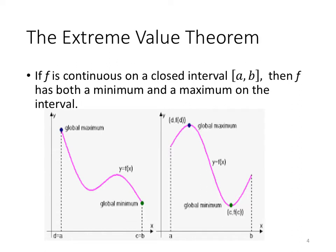Here's the Extreme Value Theorem. The Extreme Value Theorem says if f is continuous on a closed interval from a to b, then f has both a minimum and a maximum on the interval. It could be that the maximum or minimum is at an endpoint, or maybe even both. Or it could be that the maximum and minimum occur somewhere in between the endpoints. It's very important that first of all f is continuous and it's on a closed interval — if that happens, it's guaranteed that this function has both a minimum and a maximum on the interval.